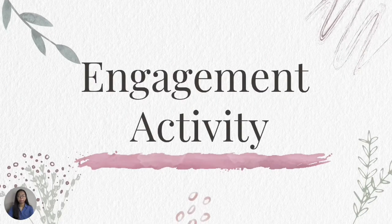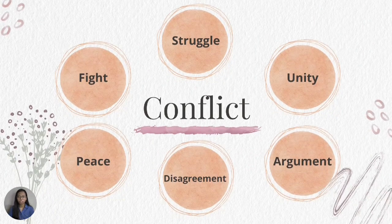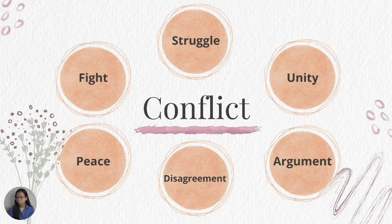Let us first have our engagement activity. I want you to get a piece of paper and a pen. For our activity, as you can see, we have the word 'conflict' in the middle and there are other words surrounding it. All you have to do is write the synonym of the word 'conflict' on your paper. I will give you one minute to finish the task. Your one minute starts now.